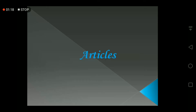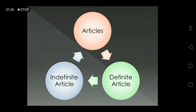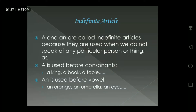So there are three articles in English: 'a', 'an', and 'the'. They are called articles because they have a significant role as parts of speech. They are also called determinants because they affect the meaning of a noun. There are two types of articles: indefinite articles and definite articles.